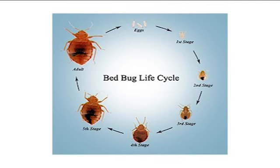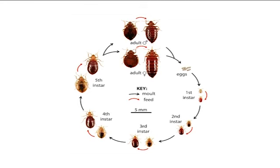Bed bugs have five immature nymph life stages and a final sexually mature adult stage. They shed their skins through ecdysis at each stage, discarding their outer shells — clear, empty exoskeletons of the bugs themselves. Bed bugs must molt six times before becoming fertile adults and must eat a blood meal to complete each molt. Each immature stage lasts approximately a week depending on temperature and food availability, and the complete life cycle can be completed in as little as two months.